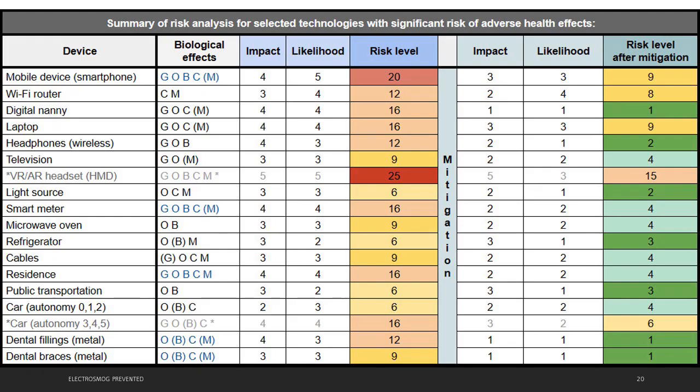Within the summary of risk analysis, we can see sources of electromagnetic radiation, associated biological effects. G as genotoxic, O as oxidative stress, B increased permeability of blood-brain barrier, C cellular effects and M melatonin. For each source or device, I have assigned impact and likelihood, which gives us risk level. From this overview, I have dropped least risky technologies, which would have risk level in green color. And I have decided to accept the risk, because it is pretty low.